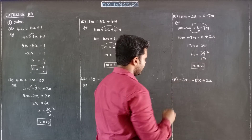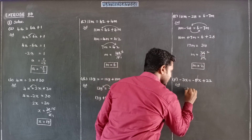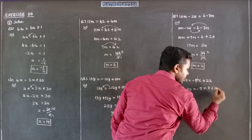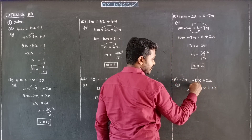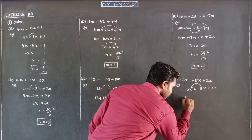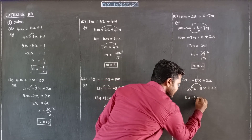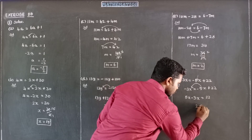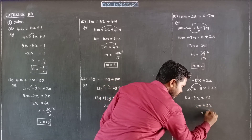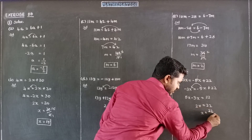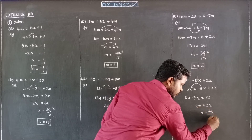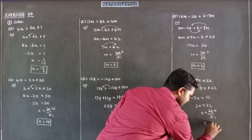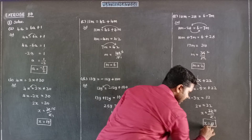Next is subdivision F: minus 3X is equal to minus 5X plus 22. Bringing minus 5X to the left side: 5X minus 3X is equal to 22. So 2X is equal to 22. Dividing both sides by 2: 11 times 2 is 22. Therefore the value of X is 11.